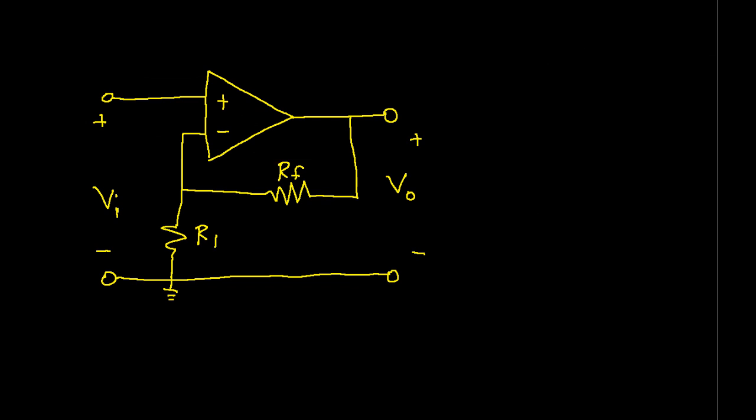So let's go ahead and do the analysis. Again, we identify V-plus. This is the voltage of the non-inverting input with respect to ground. And V-minus, the voltage of the inverting input with respect to ground.